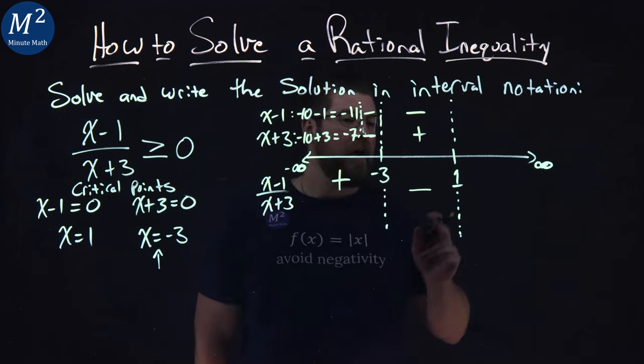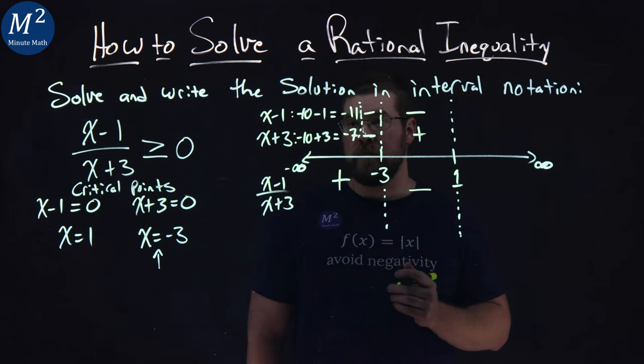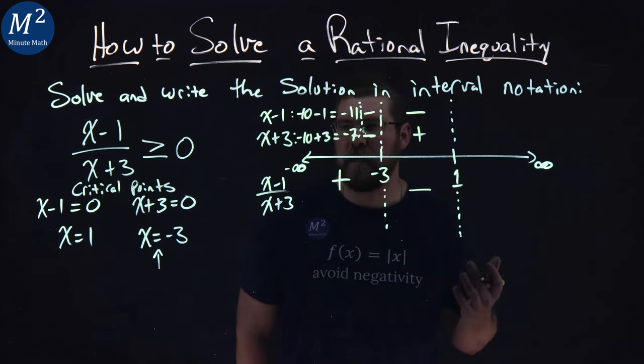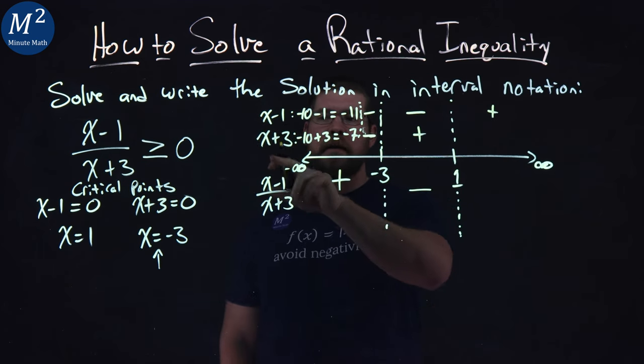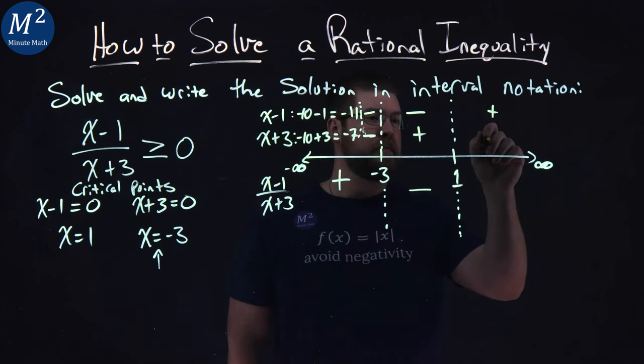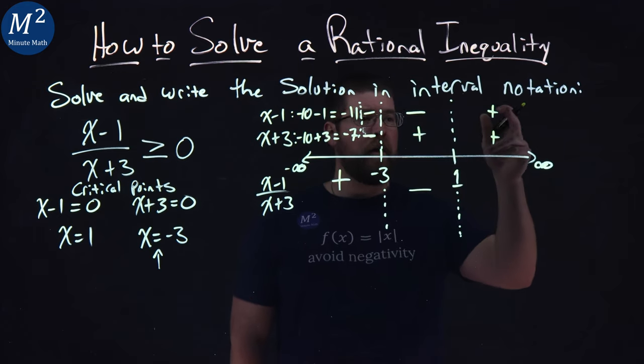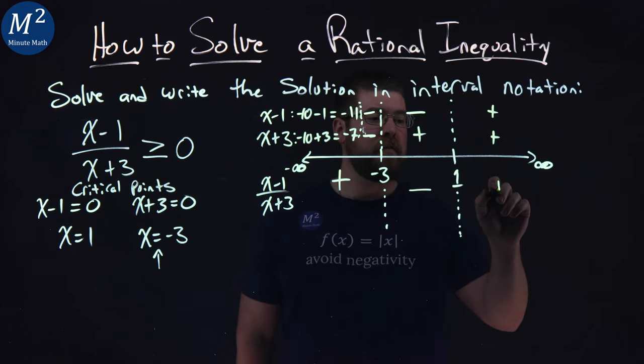Lastly here, we have 1 to positive infinity. Let's pick 10. Easy number. 10 minus 1 is 9. That's a positive. 10 plus 3 is positive 13. I get a positive. Positive divided by a positive is positive.